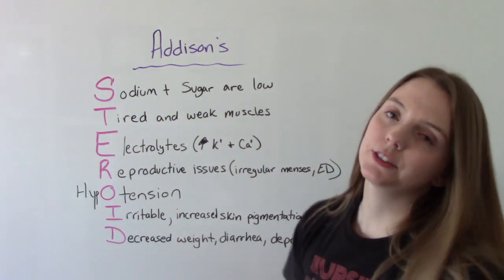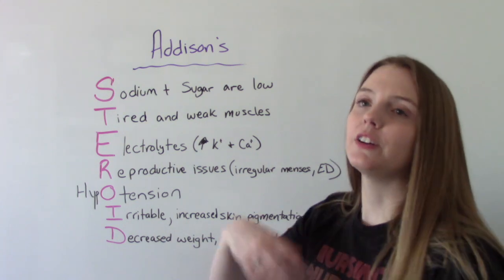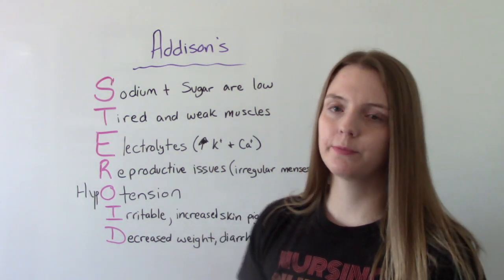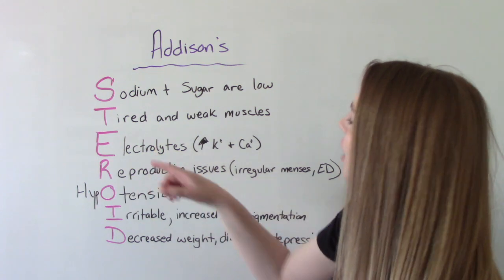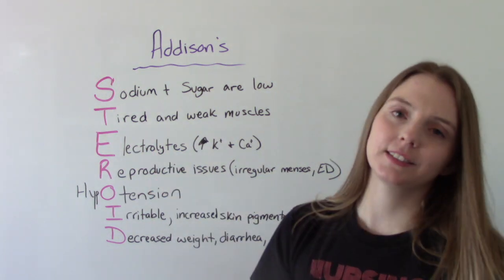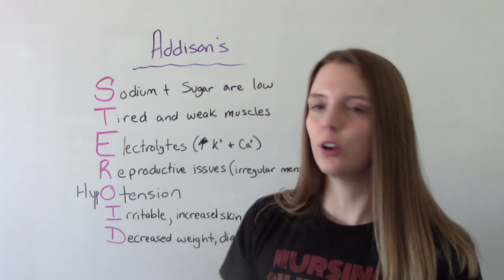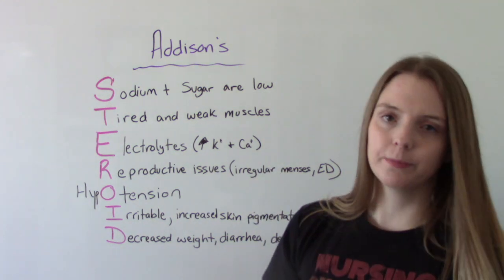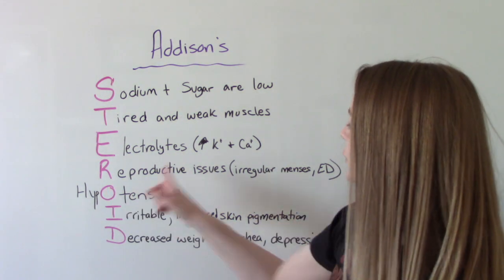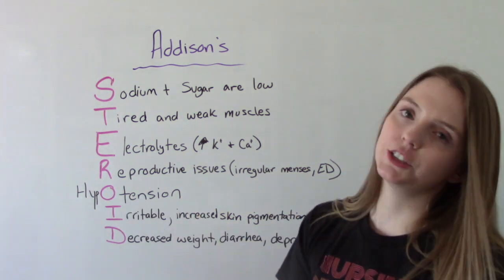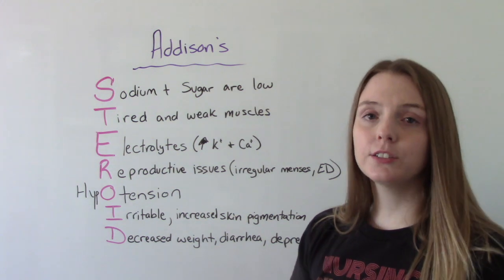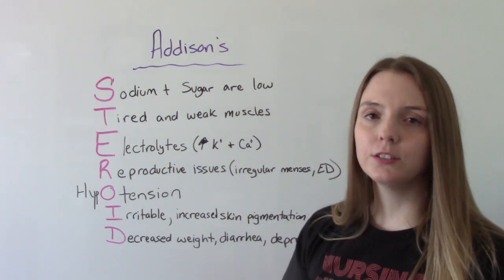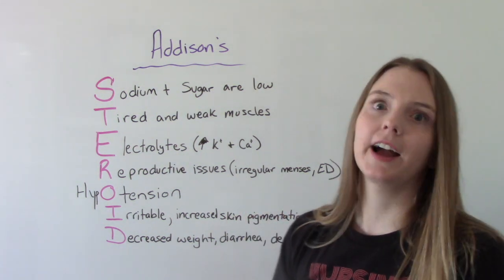T is for tired — they're going to feel tired and have weak muscles. E is for electrolytes — you'll see imbalances, with increased potassium and calcium. R is for reproductive issues — in females you might see irregular menses, and in males you might see erectile dysfunction.